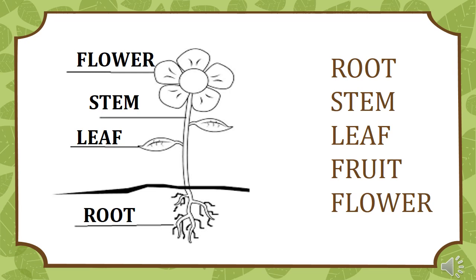Let us get to know the different parts of any plant. This will help us to understand the difference between plants of different kinds. Can you label the stem, branches, roots and other parts of a plant? See the image — this is how you have to label different parts of a plant.